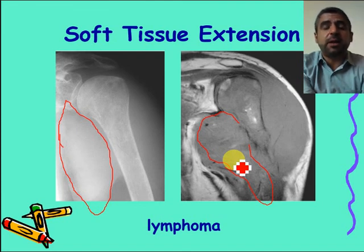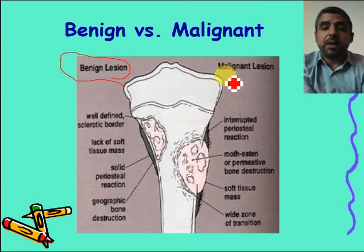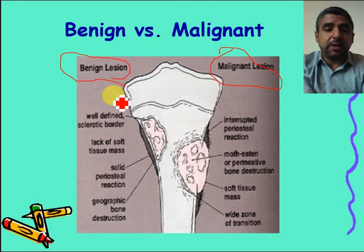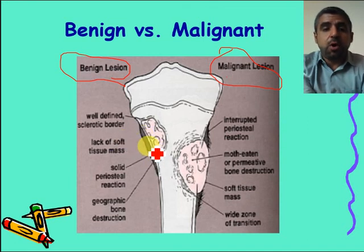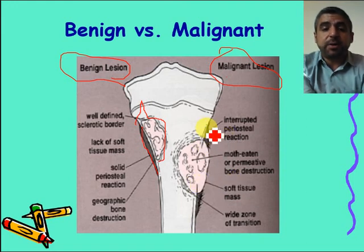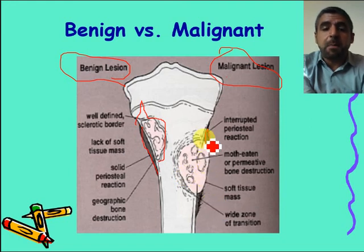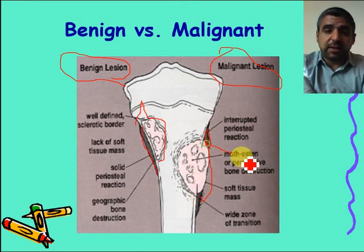Look for other clues to help decide if it is Ewing sarcoma. To summarize, benign lesions have a well-defined sclerotic border, no soft tissue component, no periosteal reaction or solid periosteal reaction, and geographical bone destruction with a narrow zone of transition. Malignant lesions have interrupted periosteal reaction with Codman's triangle, sunburst or laminated periosteal reaction, moth-eaten or permeative bone destruction, and often a large soft tissue mass.